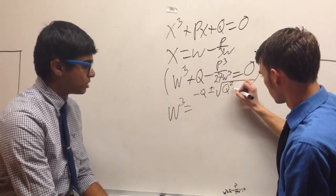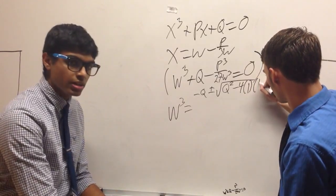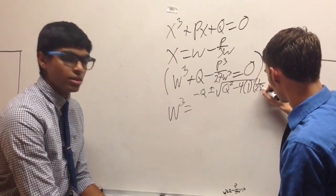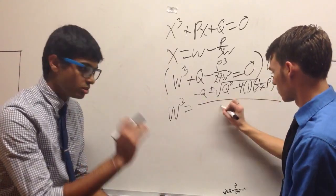And when he multiplied by w cubed, he in turn got w cubed equals negative q plus or minus square root of q squared minus 4 times 1 times 1 over 27p cubed all over 2.